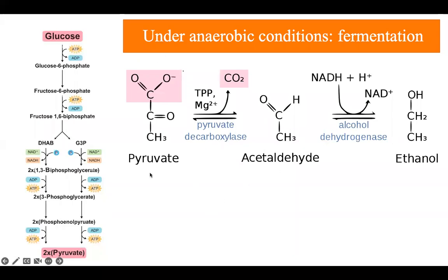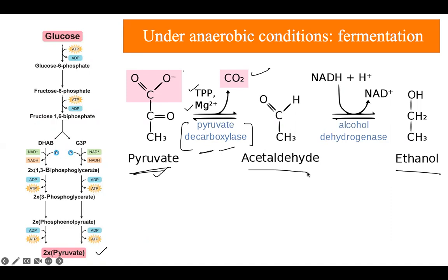In certain yeasts and microorganisms, the pyruvate formed after glycolysis is converted into ethanol by a two-step reaction. First, pyruvate is acted upon by an enzyme called pyruvate decarboxylase, which removes carbon dioxide from pyruvate. This enzyme requires a coenzyme called thiamine pyrophosphate (TPP) and a cofactor magnesium ion, and acetaldehyde is formed. Then, acetaldehyde is acted upon by alcohol dehydrogenase, converting it into ethanol. In this reaction, one NADH molecule is oxidized to NAD+. This whole process in bacteria, microorganisms, and yeast is known as alcoholic fermentation.